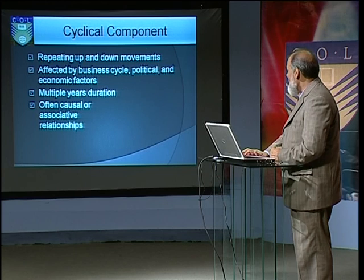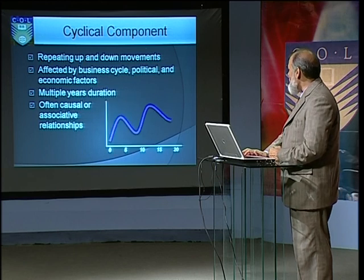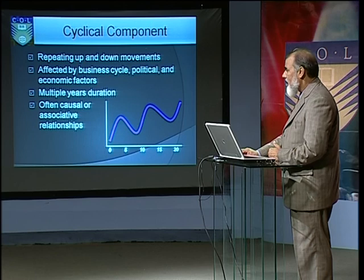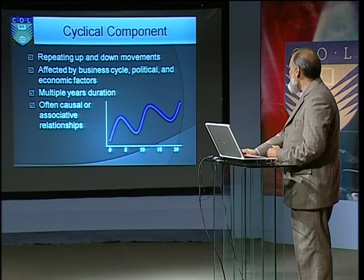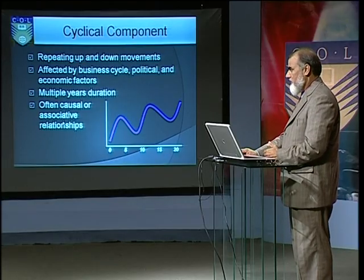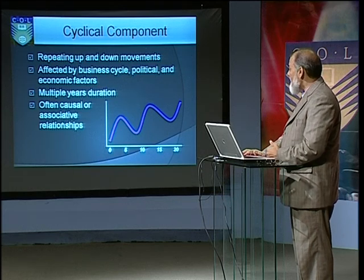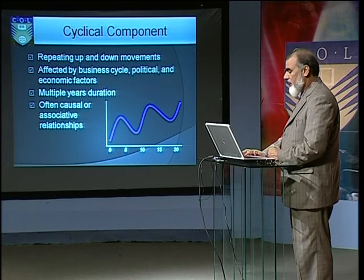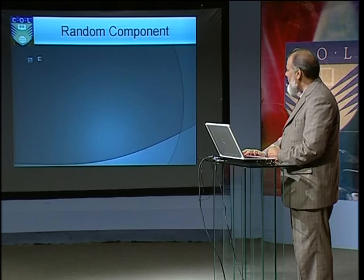There is also a cyclical component where evenly spaced cycles repeat — up, down, up, down. These are repeating movements affected by business cycles, political, and economic factors. Cyclical variation is generally over a period of longer duration, and it often involves a causal or associative relationship. We'll be discussing associative relationships in greater detail.